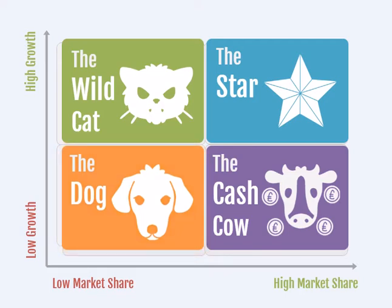Finally, we have the wildcat or problem child at the top left-hand section. These organisations and products are in a market which is growing, but currently they have a very low market share in that market. These are the organisations or products that need to be monitored and may require additional investment in order for them to become stars.